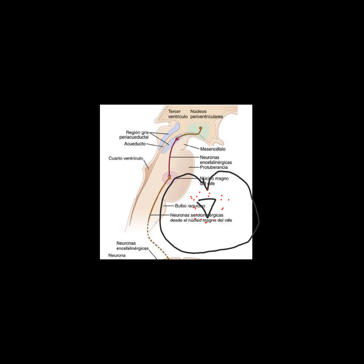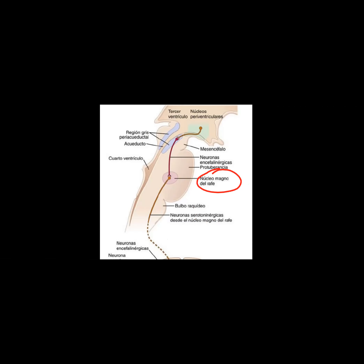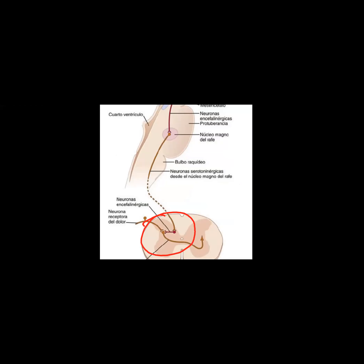El sistema de analgesia tiene tres componentes: la sustancia gris periacueductal del mesencéfalo, el núcleo magno del Rafe ubicado entre la médula oblongada y el puente, que produce analgesia en el encéfalo, y el complejo inhibidor situado a nivel de las astas dorsales de la médula espinal. El grado de adaptabilidad al dolor depende de estas tres regiones. En las astas posteriores existen neuronas llamadas encefalinérgicas.